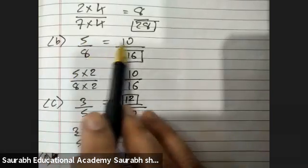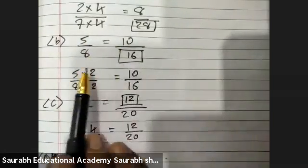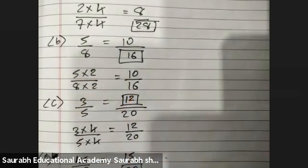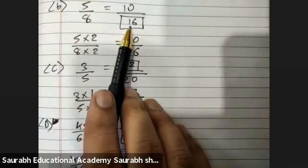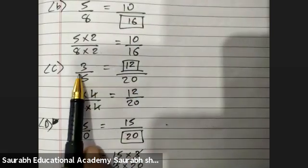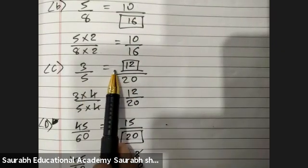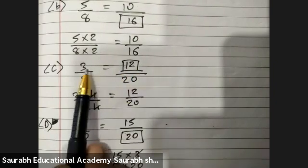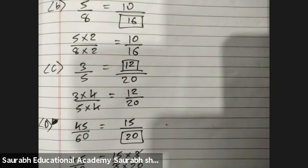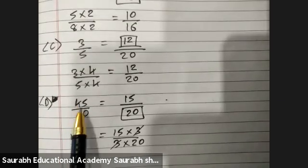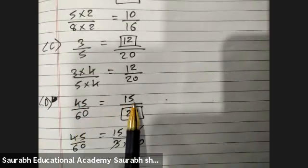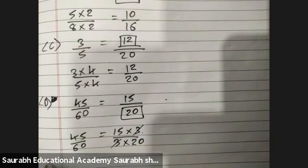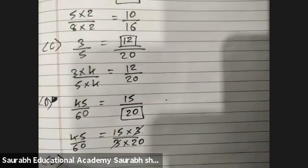Five by eight equals ten upon sixteen. So in the blank we'll put 16. Same way, three upon five equals blank upon twenty. Five fours are 20, then three fours are 12. Next is 45 upon 60. Fifteen threes are 45, twenty threes are 60. Three cuts, answer is 20.